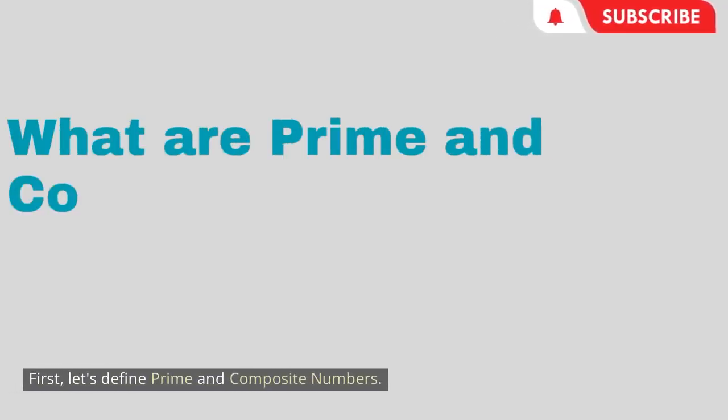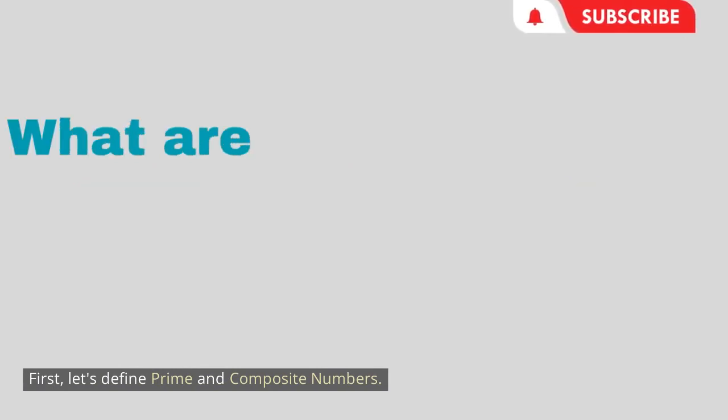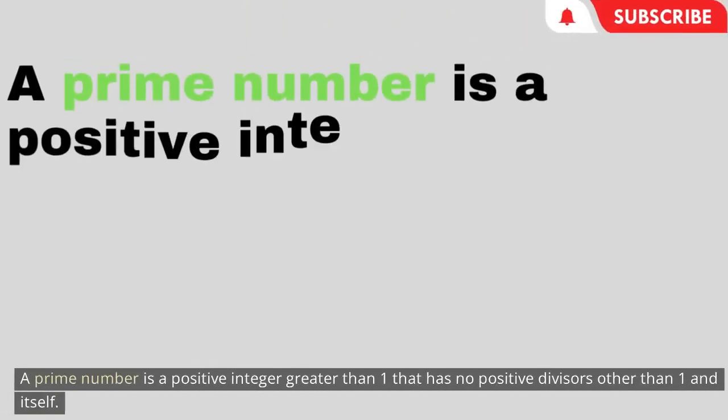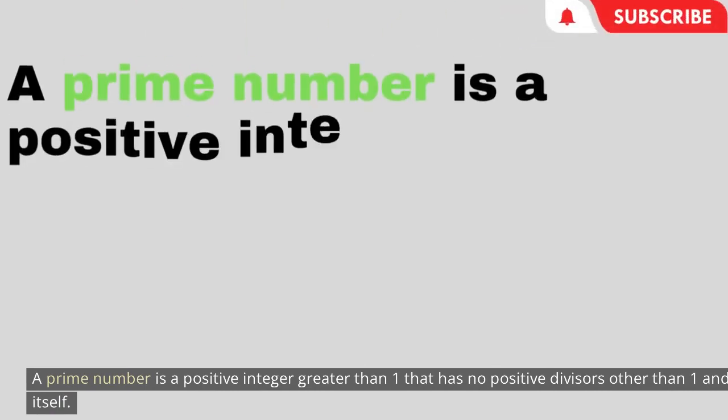First, let's define prime and composite numbers. A prime number is a positive integer greater than 1 that has no positive divisors other than 1 and itself.